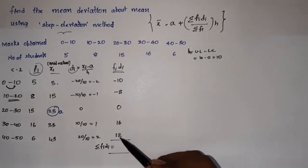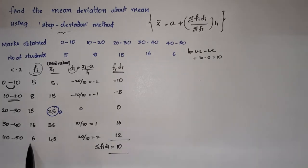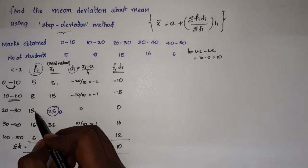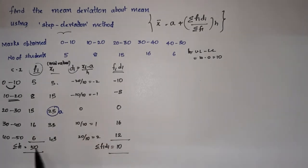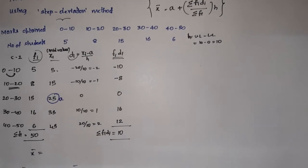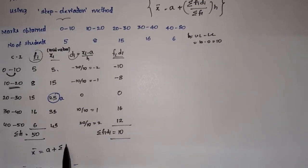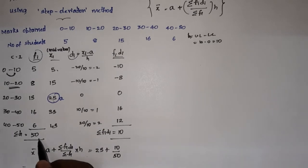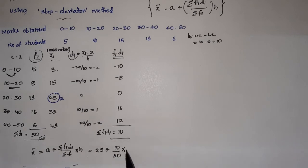Σfi·di = 10. Σfi: 5 + 8 = 13, 13 + 15 = 28, 28 + 16 = 44, 44 + 6 = 50. Mean formula: x̄ = A + (Σfi·di / Σfi) × h. So x̄ = 25 + (10/50) × 10.